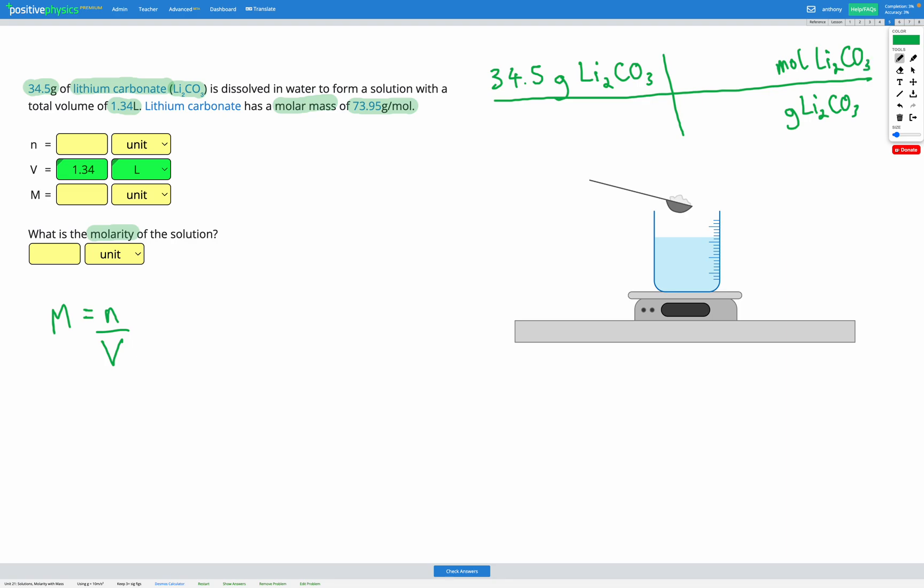My molar mass is 73.95 grams per mole, which means that one mole of lithium carbonate equals 73.95 grams of lithium carbonate. So that's going to be my conversion factor in my dimensional analysis table. The top and bottom of my fraction equal each other, which is exactly what we need for our dimensional analysis table.